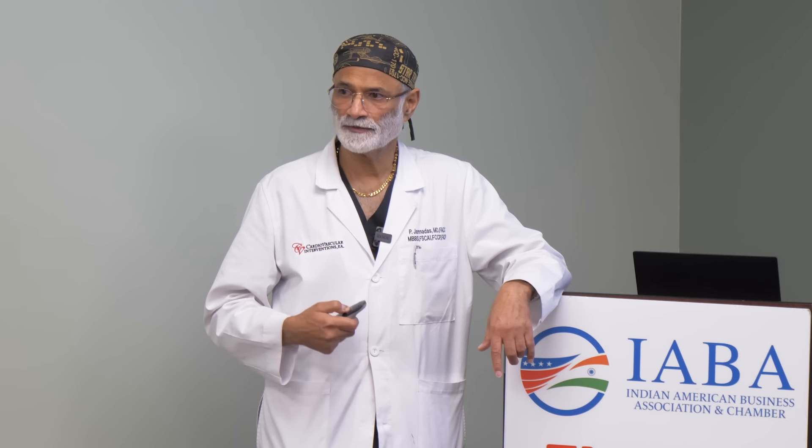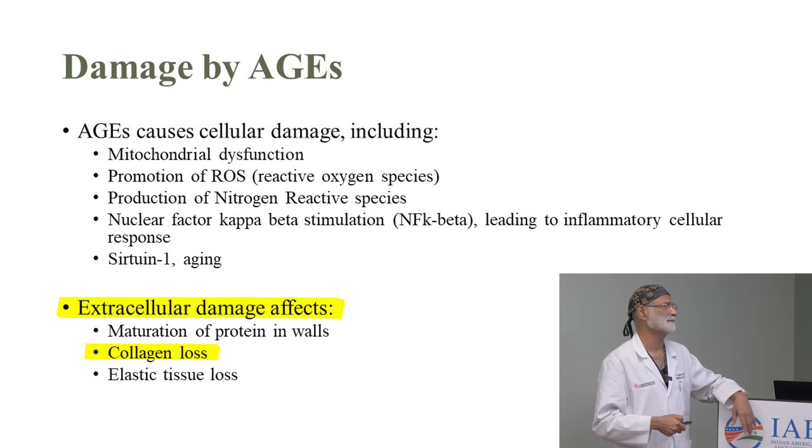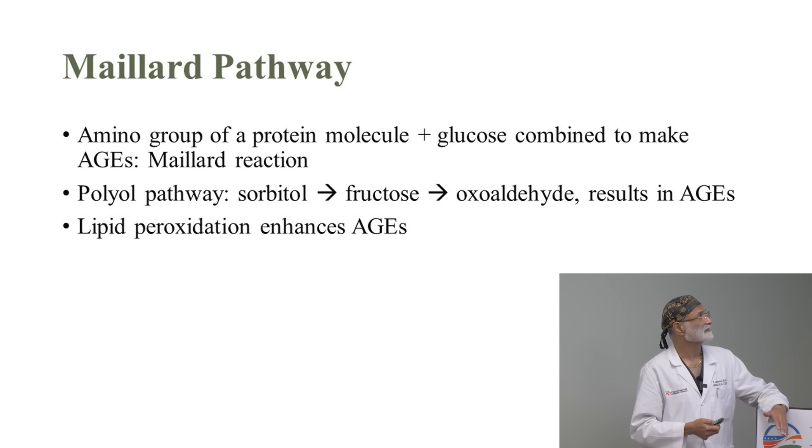Advanced glycation end products also cause collagen loss. If you don't want wrinkles, then don't accumulate advanced glycation end products, because they destroy collagen. People who have a lot of them — meaning high sugars and the wrong types of fats — get small, dense particles, wrinkles, and they're basically aging rapidly. When the collagen's gone from your arteries, you get hardening of the arteries, diastolic dysfunction, and hypertension. What also causes these bad molecules? Alcohol, liver disease, cigarettes, and omega-6 fatty acid diets.